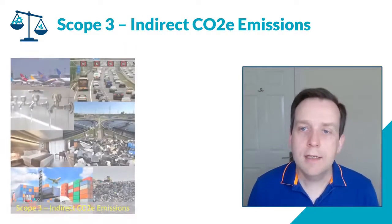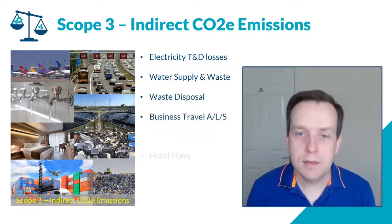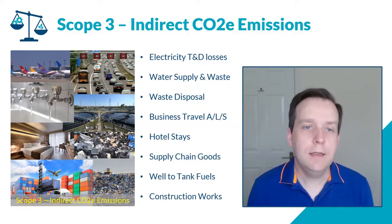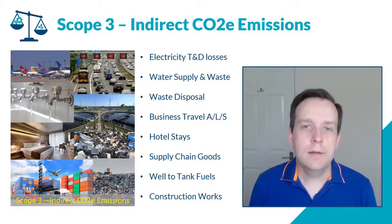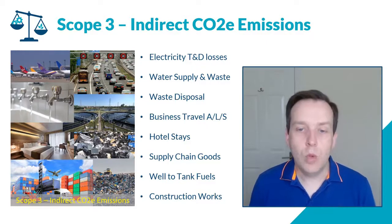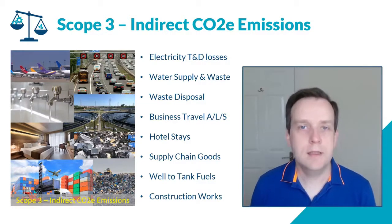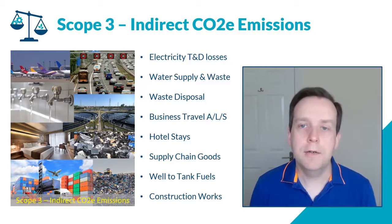Finally, scope three covers indirect CO2 emissions and is the biggest one for most businesses, containing the most items to investigate. Scope three are indirect emissions — emissions as a result of your business existing but not necessarily under the direct control of your business. For example, waste disposal: you may have a waste carrier who takes away your waste and either recycles it or sends it to landfill. You're indirectly responsible because your business generated the waste, but the waste company is directly responsible.